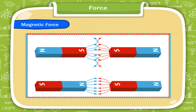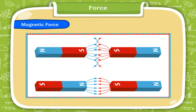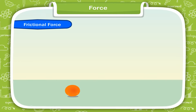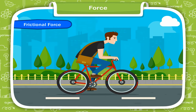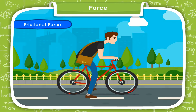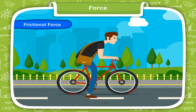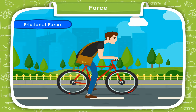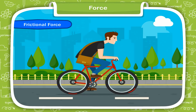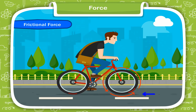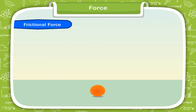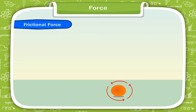Frictional Force: Roll a rubber ball on the ground — after some time, the ball stops. Similarly, if we stop pedaling a cycle, its speed will reduce and after some time it stops moving. A force can move and stop an object; it can bring an object to motion and bring it to rest. A moving bicycle stops after some time because an opposite force from the ground acts on it. The rolling rubber ball also stops because a force acts on it in the opposite direction of its motion. Frictional force tries to stop moving objects.